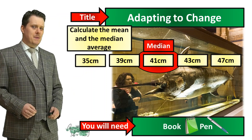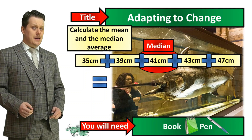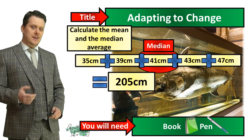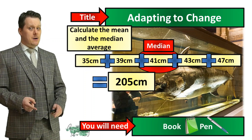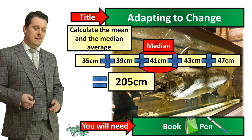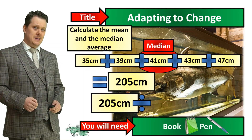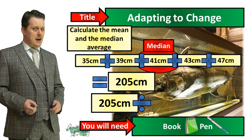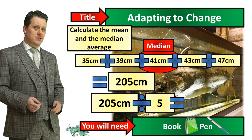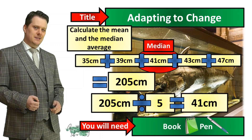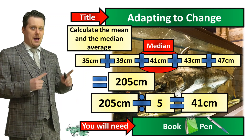To calculate my mean average, I'm going to need to add all of these together. When I do that, I get a total of 205 centimetres. But then I need to divide by how many pieces of data I have in my data set — I've got five. So I take 205 centimetres, divide it by five, and that gives me a mean average of 41 centimetres. In this case, my mean average is the same as my median average.